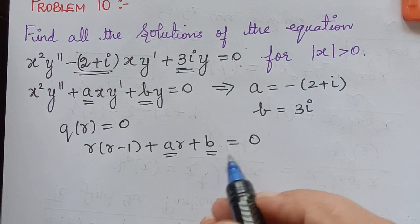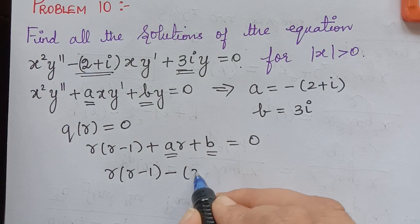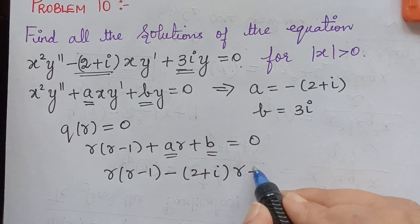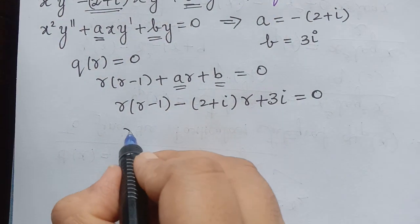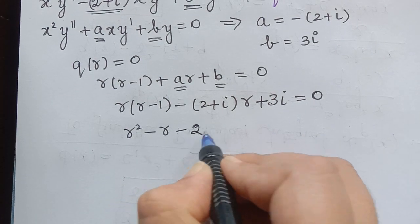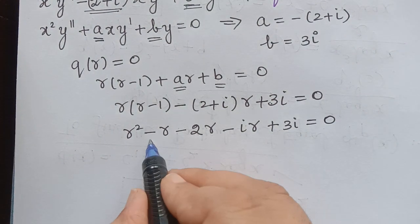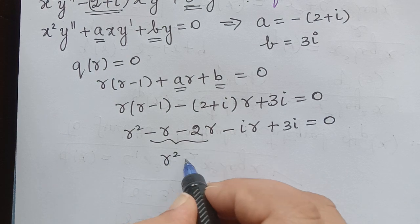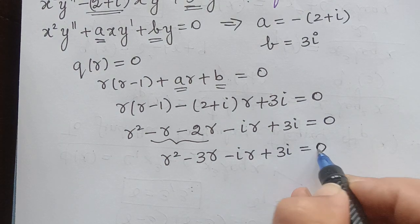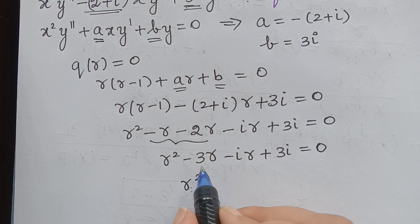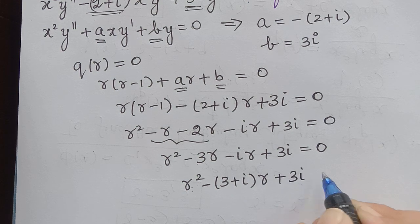Substituting the values of a and b, we get r(r minus 1) plus (negative 2 plus i)·r plus 3i equals 0. Simplifying: r squared minus r minus 2r minus ir plus 3i equals 0, which becomes r squared minus 3r minus ir plus 3i equals 0, or r squared minus (3 plus i)·r plus 3i equals 0.